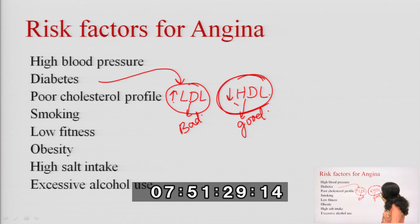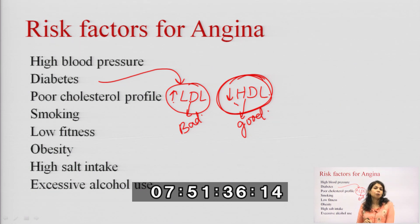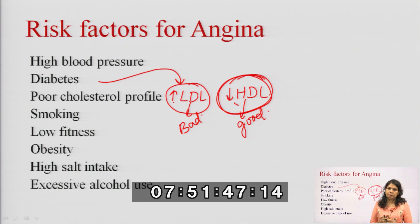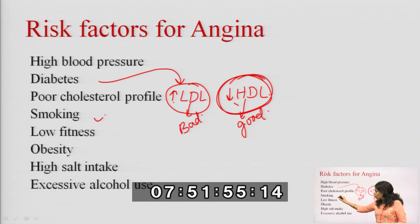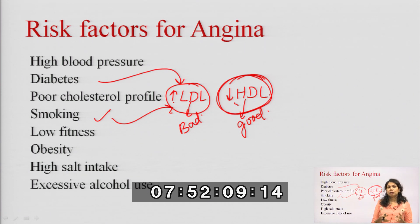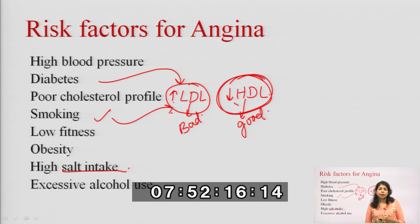In diabetes, LDL increases and HDL decreases. HDL is good cholesterol — when HDL is high, it erodes out the LDL. But in diabetes the opposite happens. Smoking is also a risk factor. Low fitness, sedentary lifestyle, and obesity lead to cholesterol deposition and may ultimately lead to angina. High salt intake may lead to hypertension; excess sodium and excess alcohol use may also lead to angina.